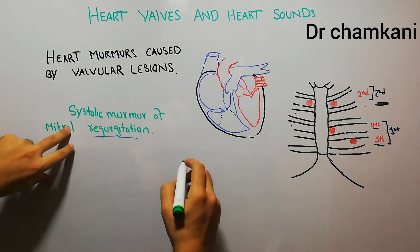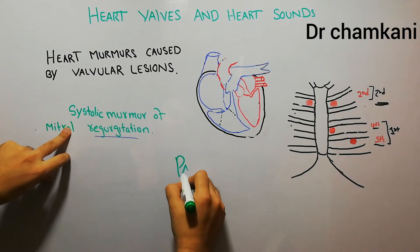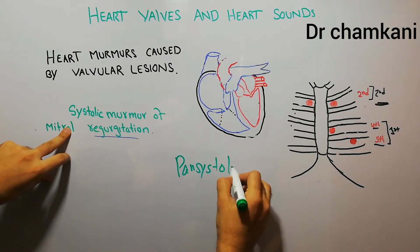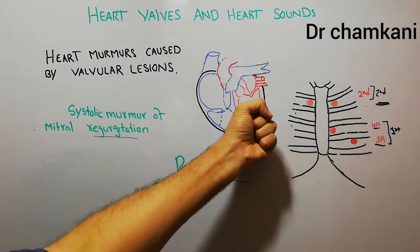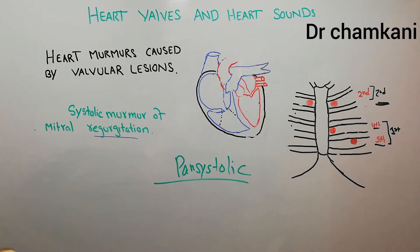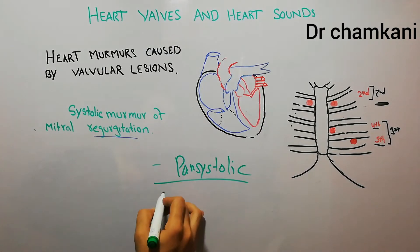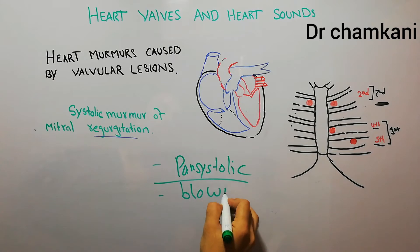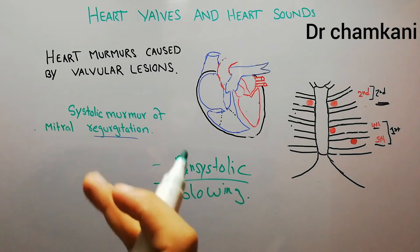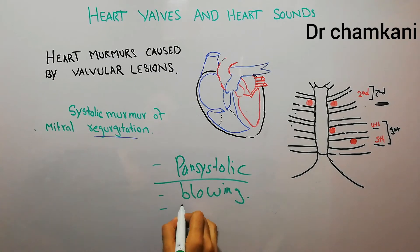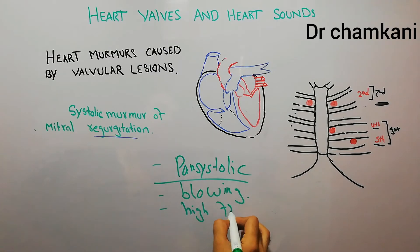This murmur is basically pansystolic, meaning it can be heard throughout the systole — from the start to the end of contraction of the left ventricle. This murmur is blowing in nature; the sound is like something is blowing. And it is also a high frequency murmur.